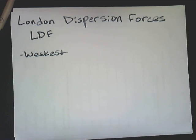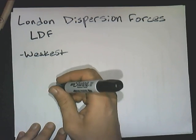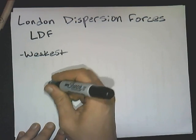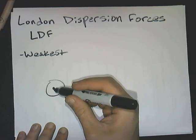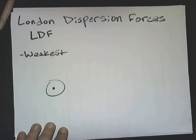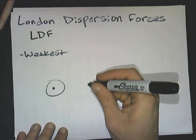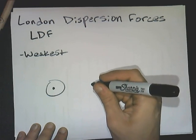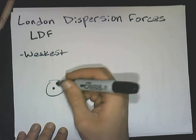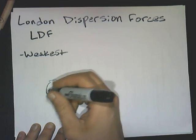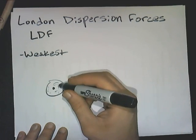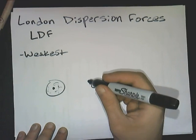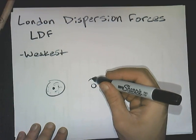So what is a London dispersion force? If we have an atom, our electrons are nice and evenly distributed around our positive nucleus. But what can happen is our electron cloud, since this is just electrons running around determined by probability, they can actually shift. So it's not a perfect sphere.